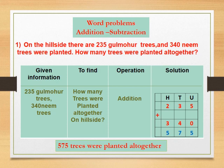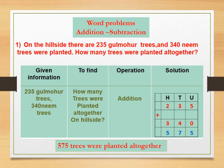First we write the given information: 235 Gulmohar trees and 340 Neem trees. To find: how many trees were planted all together — एकूण किती झाडे लावली हे आपल्याला काढायचे आहे. Operation: here we see how many trees were planted all together, so we write addition — इथे आपण बेरीज ही क्रिया करणार आहोत.